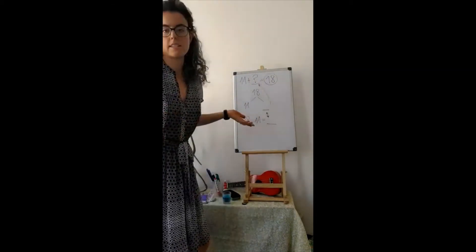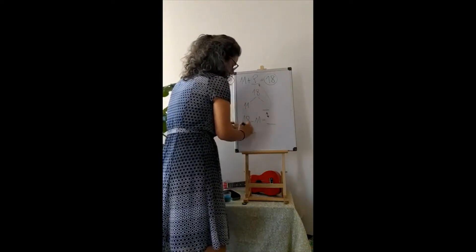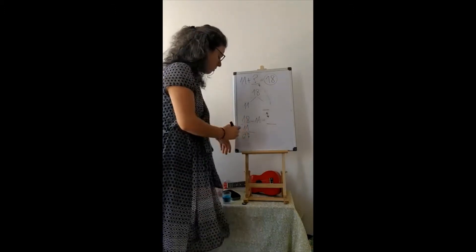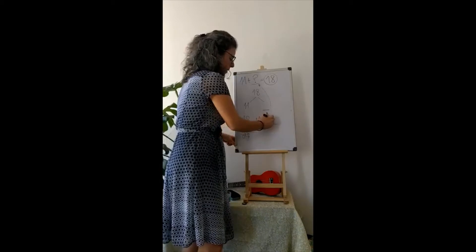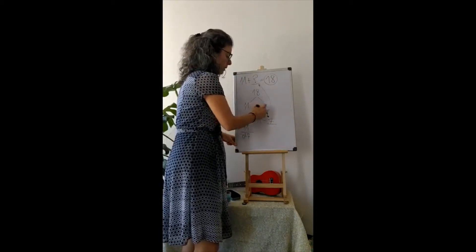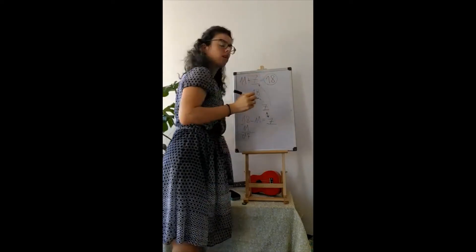What is eighteen minus eleven? Well, let's see. Eight minus one is seven, and one minus one is zero. Okay, so we know that this number is seven, which means that the other group is also seven, which means that this number is seven.